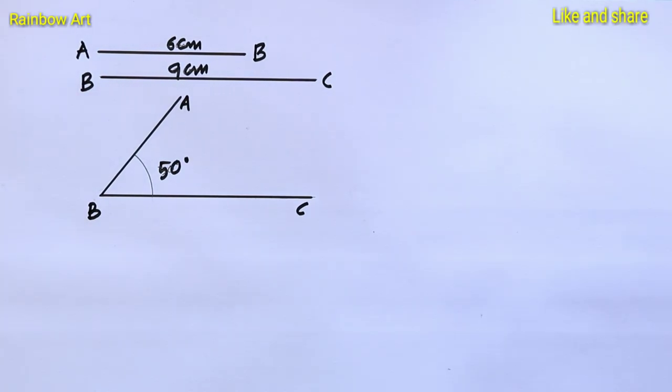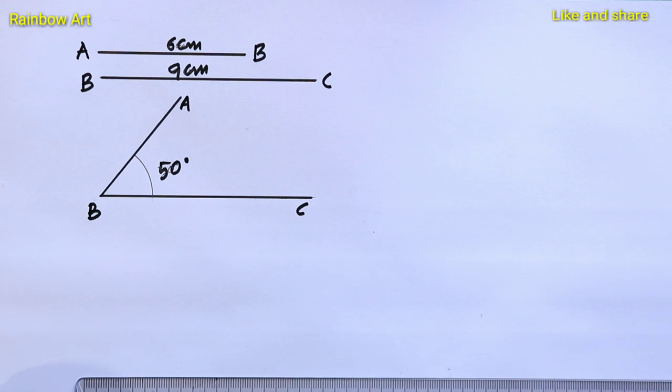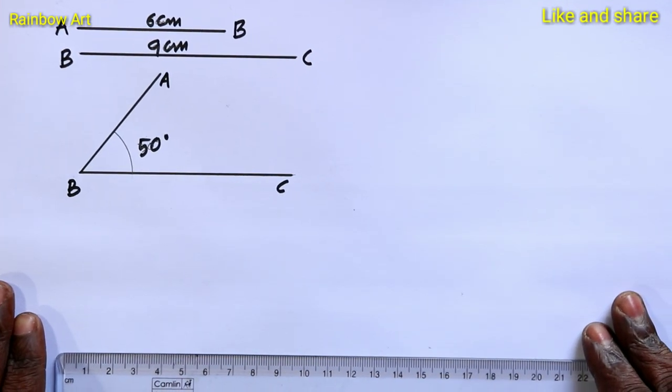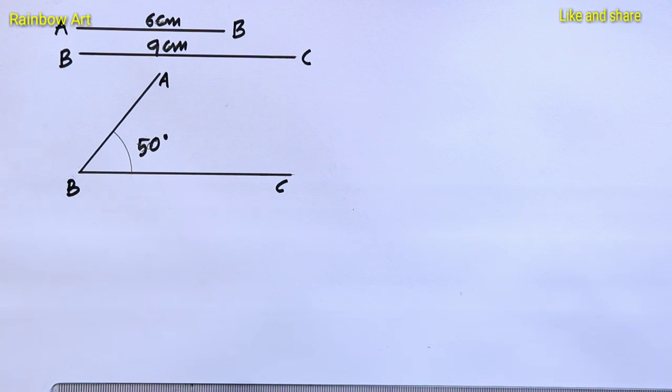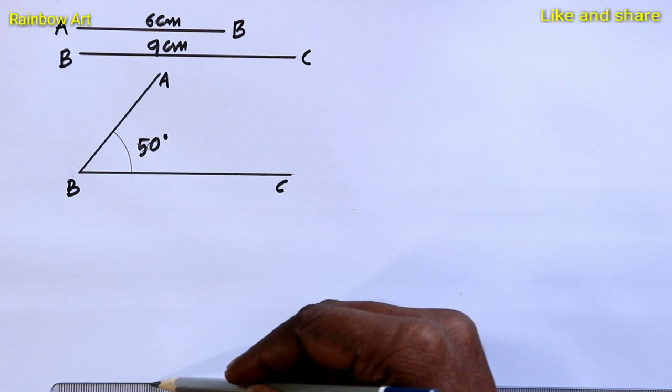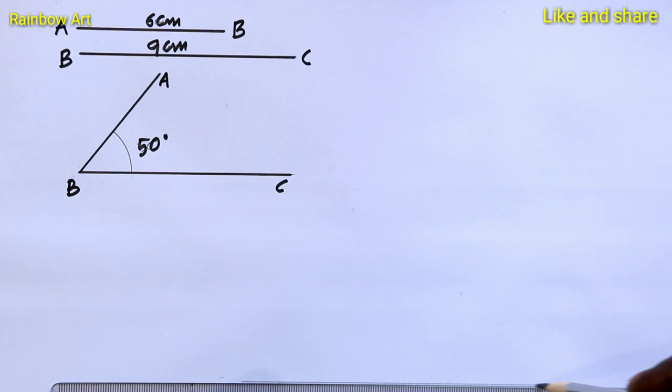Suppose you have given two sides AB 6 cm, BC 9 cm and a triangle between ABC 50 degree. First, you have to take a straight line just like this.